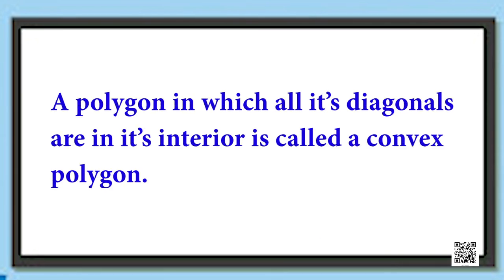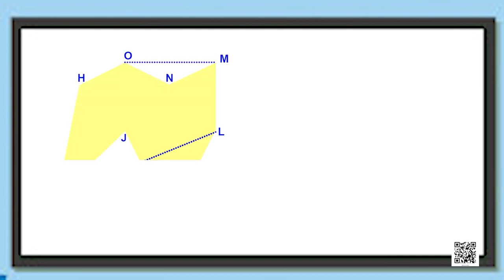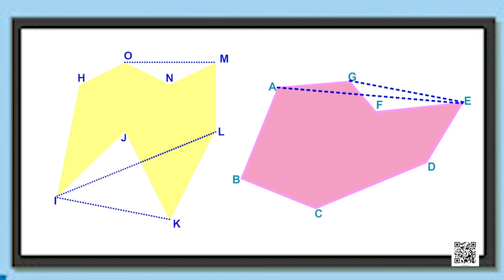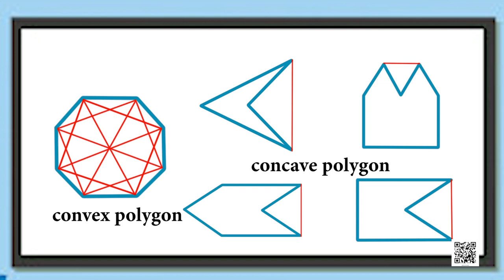A polygon in which all its diagonals are in its interior is called a convex polygon. A polygon with at least one of its diagonals in its exterior is called a concave polygon. These are all concave polygons because at least one of their diagonals is in the exterior. This polygon is a convex polygon because all its diagonals lie in its interior.